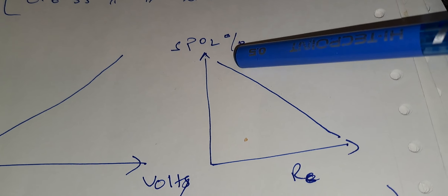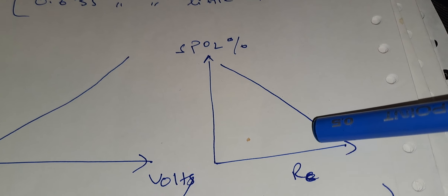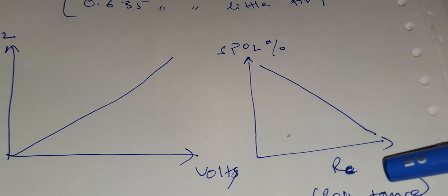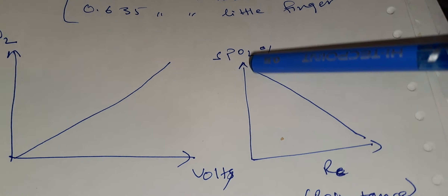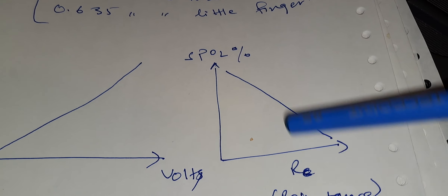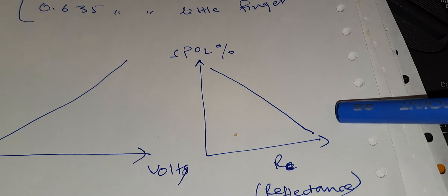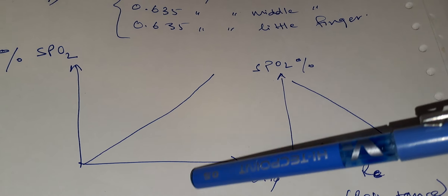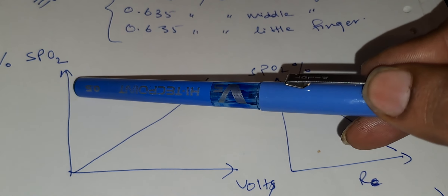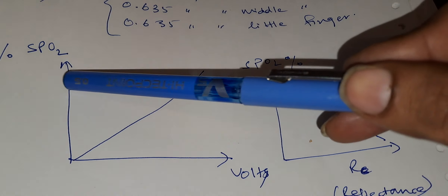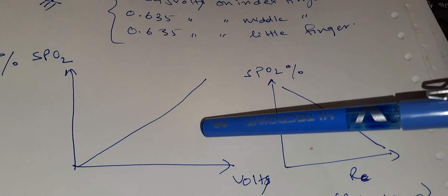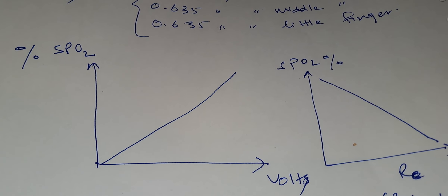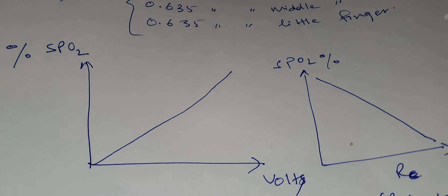I am going to show the circuit now. As you can see, this is my circuit diagram. This is the transmitter IR LED with a 1K resistance in series. This is the receiver LED in series with 1 mega ohm resistance and 100K resistance. Here we are measuring the voltage and getting 0.645, 0.635 on the different fingers. This is the relation of specific oxygen percentage with the volts — it is a directly proportional linear curve.